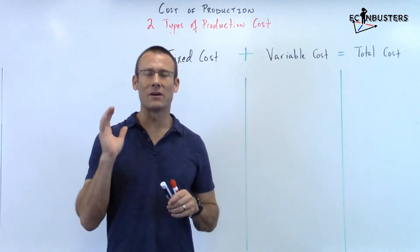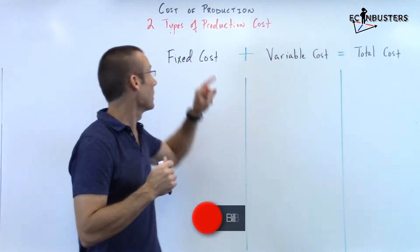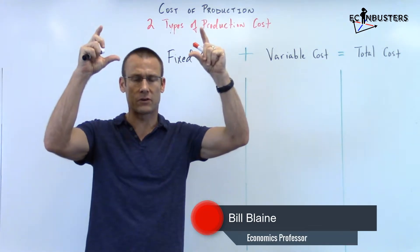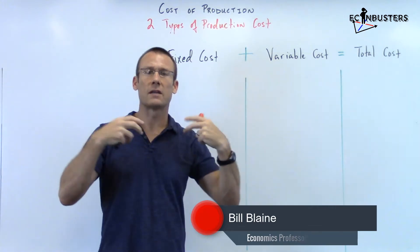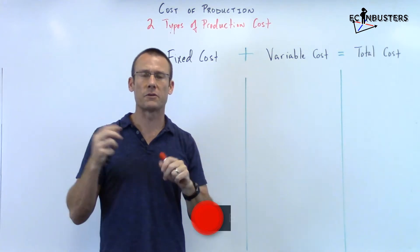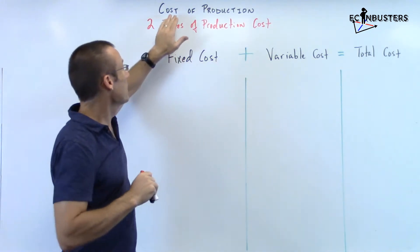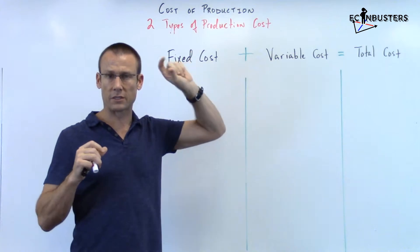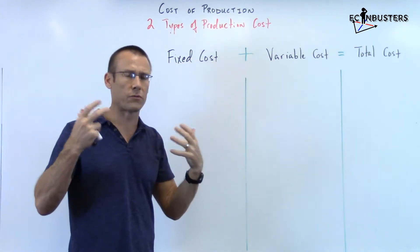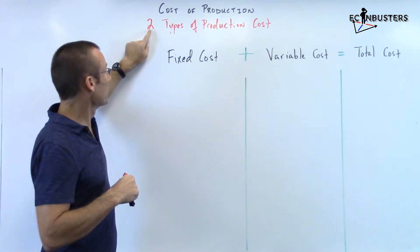Hey everybody, welcome back. We are still on theory of the firm, and we are on cost of production. This is a unit inside of theory of the firm. Theory of the firm is how firms — or companies — make decisions. Inside of that, we're trying to understand production cost, or cost of production.